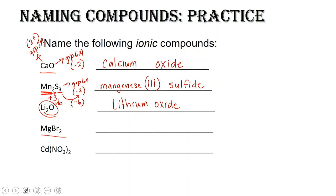The next one: we have magnesium and bromine. Magnesium is in group 2 — it's not a transition metal, so it keeps its name. And bromine is a non-metal in group 7, so you drop the ending and add 'ide' — bromide.